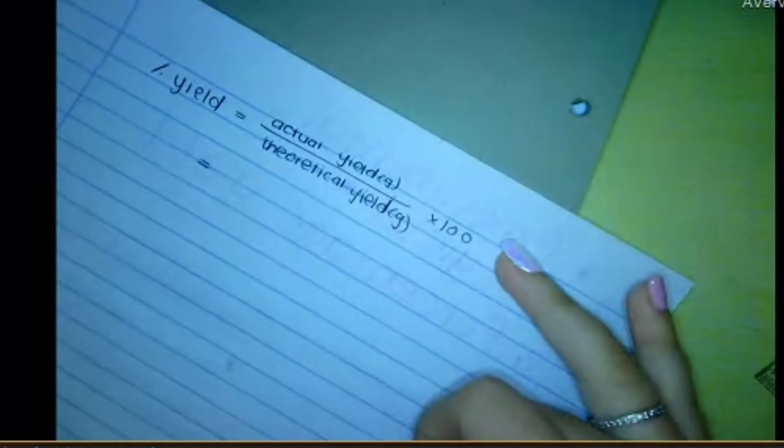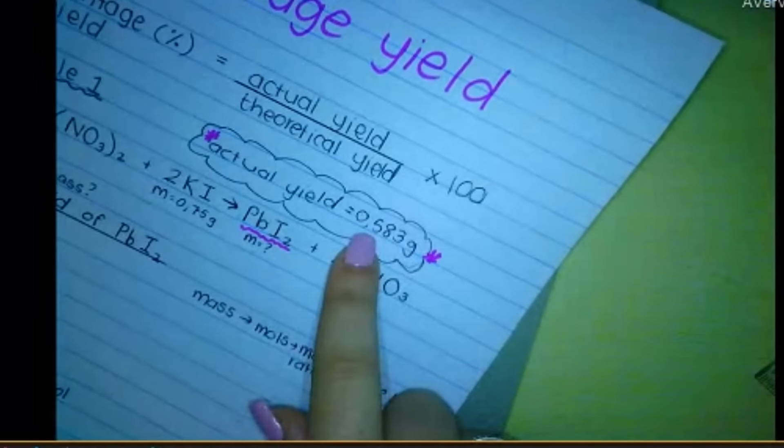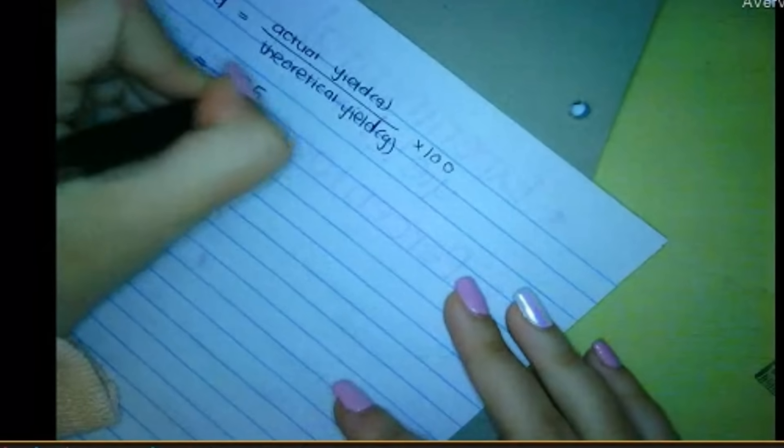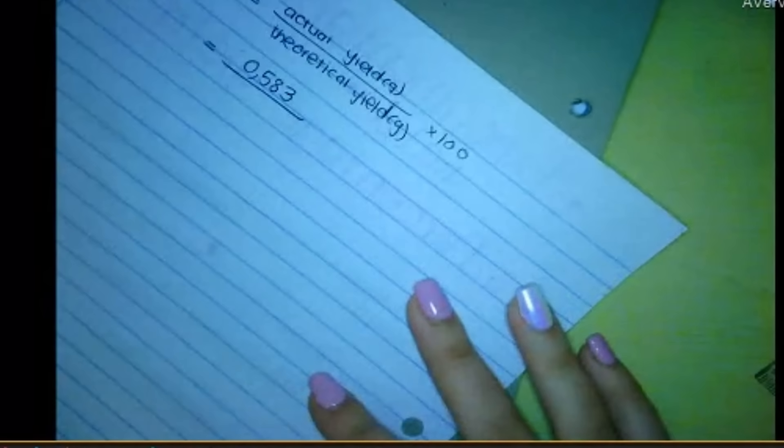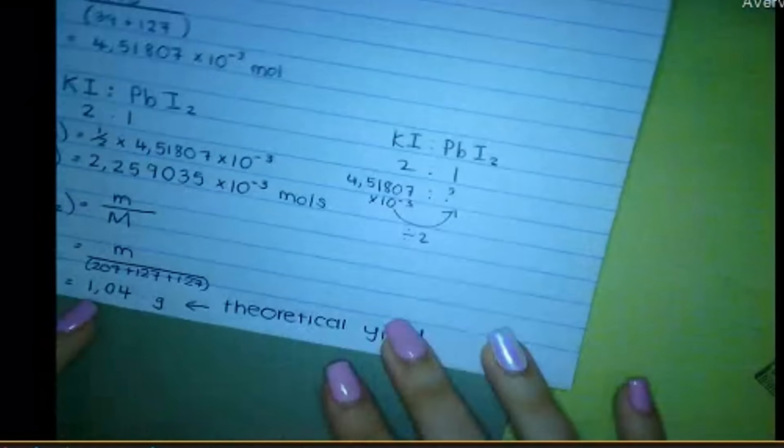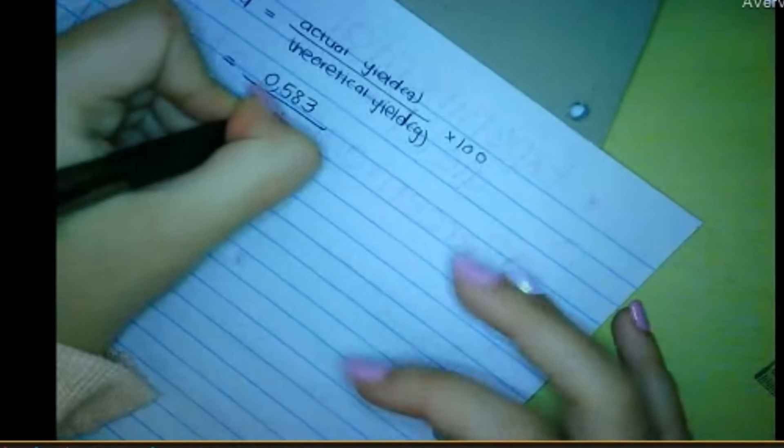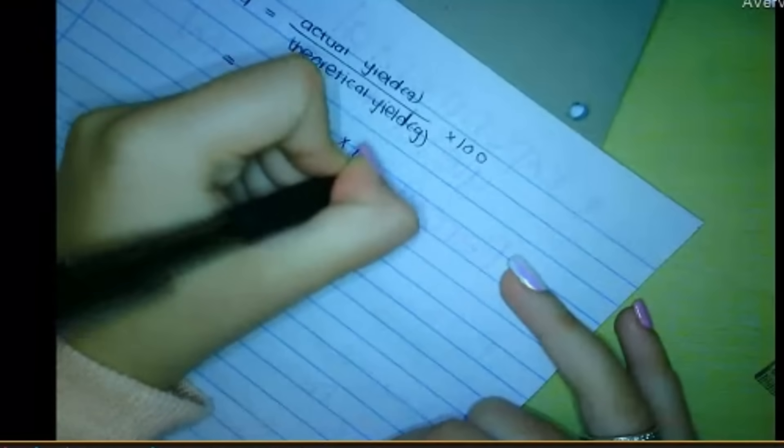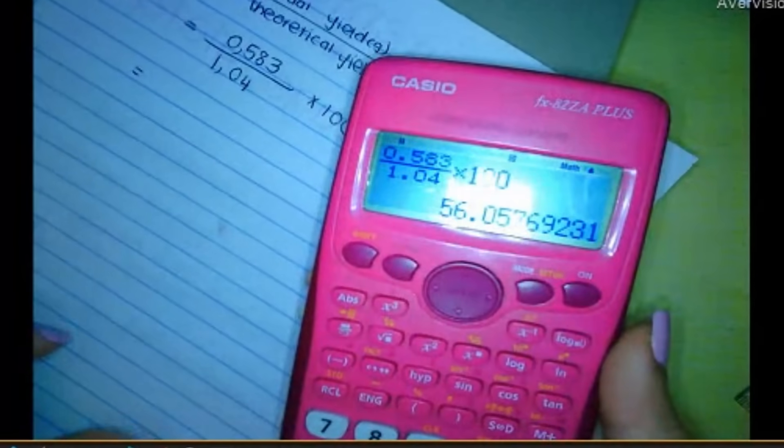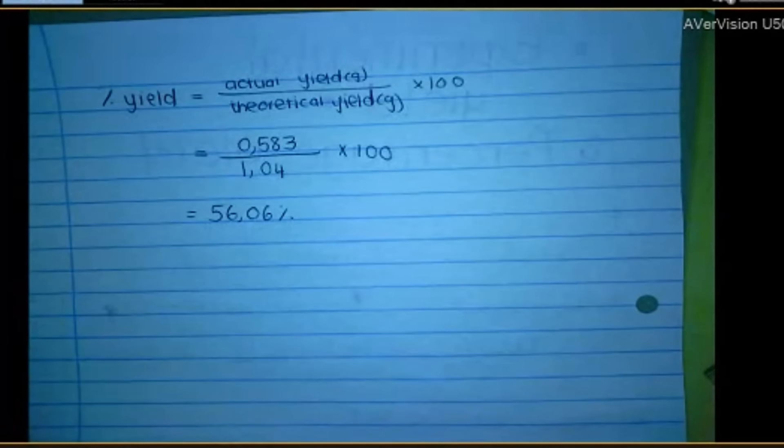So I said I actually got 0.583. Theoretically, I should have gotten 1.04. You times that by 100. Let's work that out. 56.06%. All that effort and basically just a little bit more than half of what you expected is what you actually obtained.